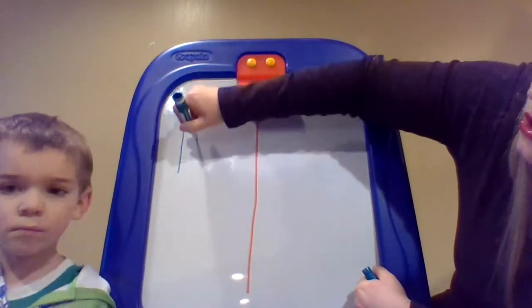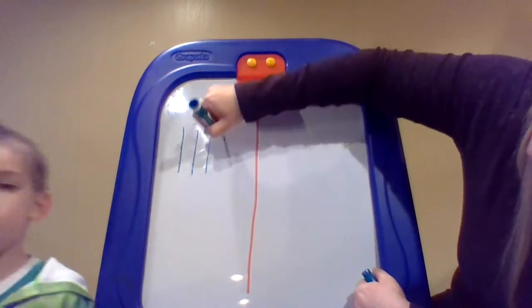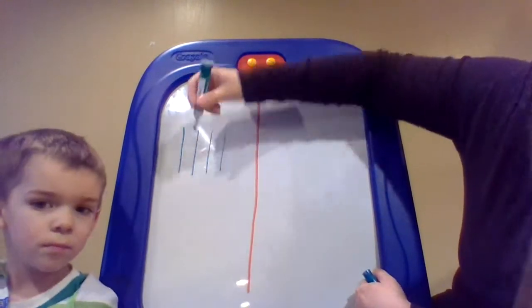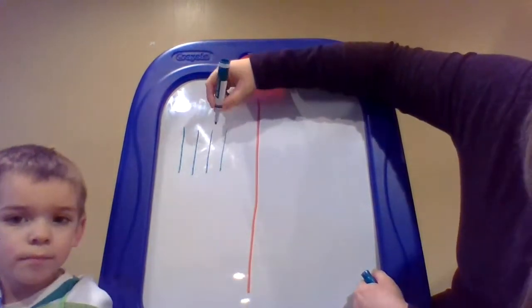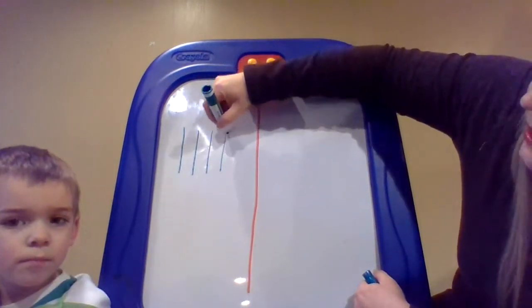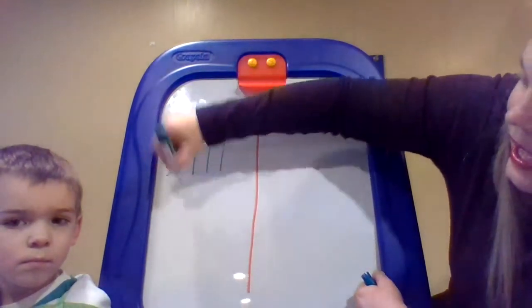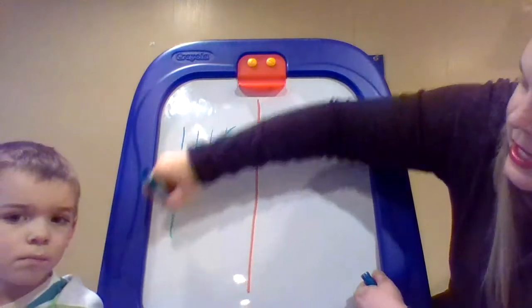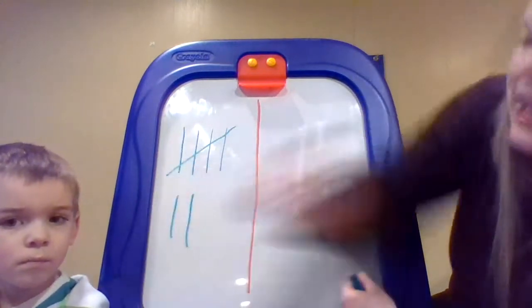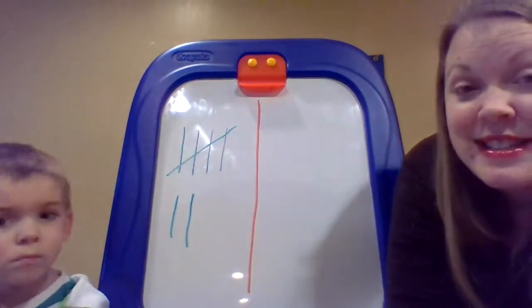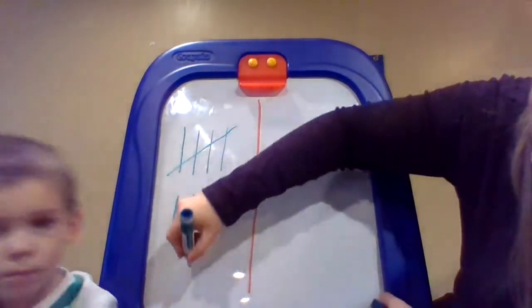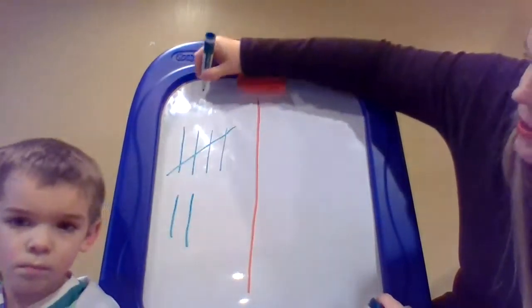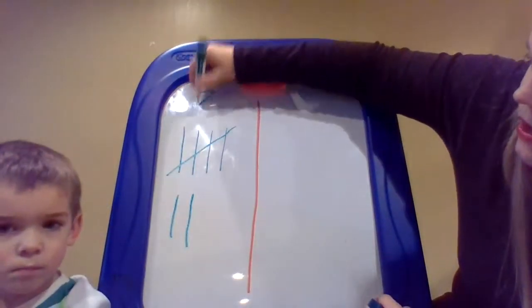One, two, three, four. For number five, I do that line. Five, six, seven. That is seven tallies. I'm going to also write the number seven up here.